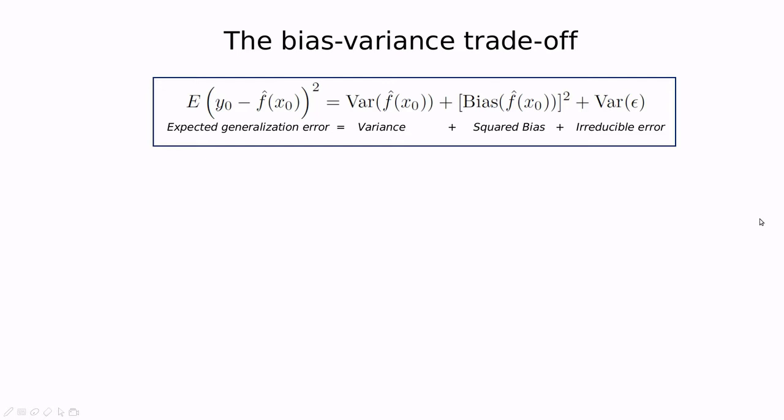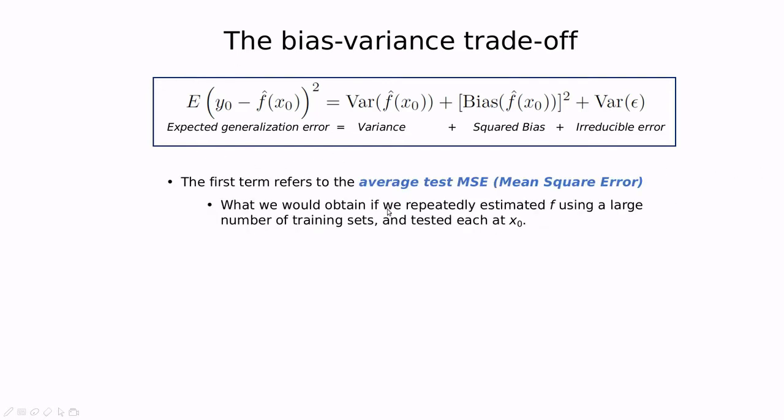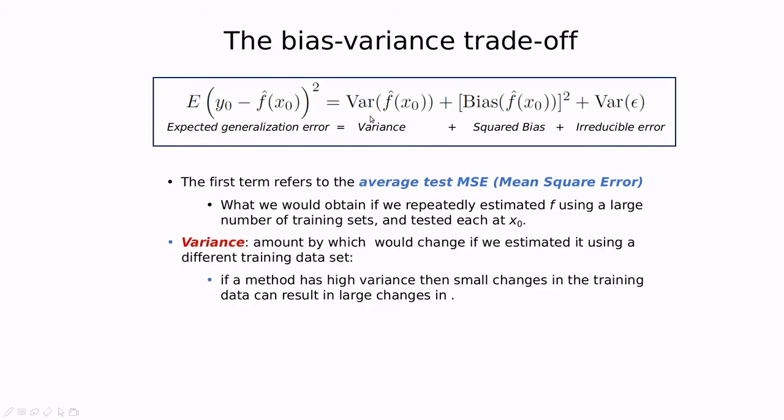How can we quantify this tradeoff? This is the expected error of generalization, typically called the MSE, the mean square error. This is what we want to minimize. We want a good classifier, and a good classifier is one in which the function that we are trying to measure is the closest to the real data. We're going to split the error in three parts.